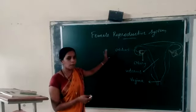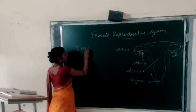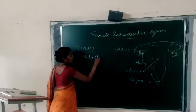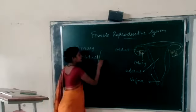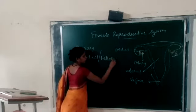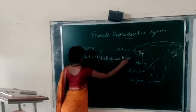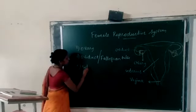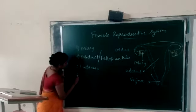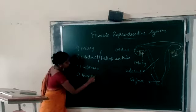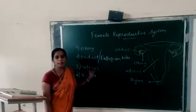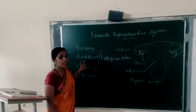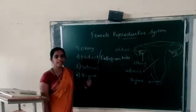The Female Reproductive System consists of ovaries — a pair of ovaries — then the oviduct, otherwise known as the Fallopian tube, then the uterus, and then the vagina. So these are the main female reproductive parts: ovary, oviduct or Fallopian tube, uterus, and vagina.